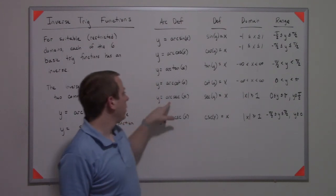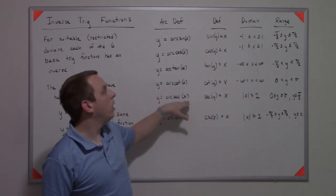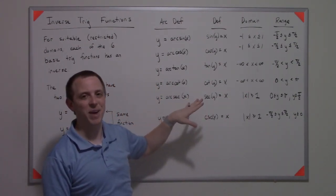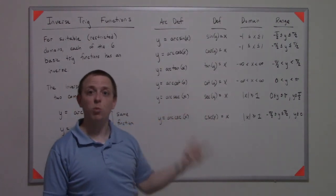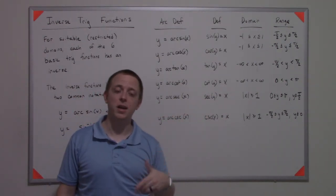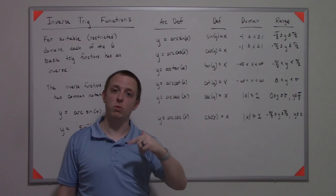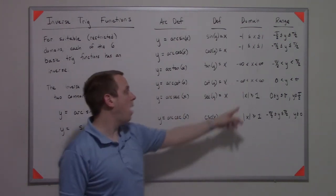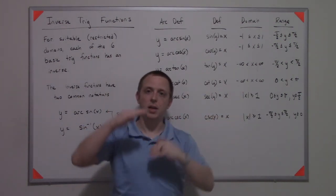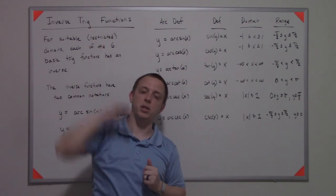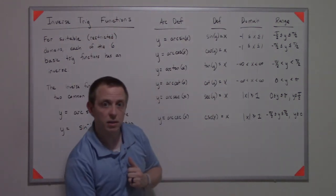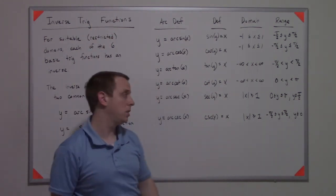The secant function is one over cosine. Since cosine goes from negative one to one, the outputs one over that go from one to infinity in the positive case, and negative one to negative infinity in the negative case. That's why you have restricted domains there.